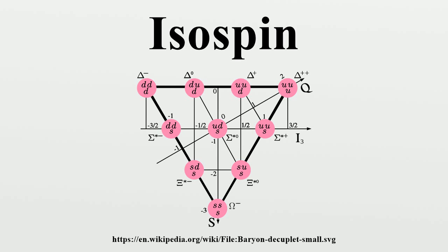Heisenberg's contribution was to note that the mathematical formulation of this symmetry was in certain respects similar to the mathematical formulation of spin, whence the name isospin derives. To be precise, the isospin symmetry is given by the invariance of the Hamiltonian of the strong interactions under the action of the Lie group SU(2). The neutron and the proton are assigned to the doublet of SU(2), and the pions are assigned to the triplet of SU(2). The isospin operator I is vector-valued, with three components I_x, I_y, I_z, which are coordinates in the same three-dimensional vector space where the three-representation acts.